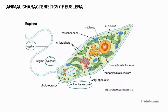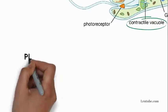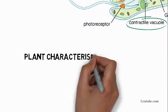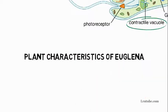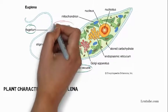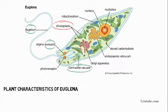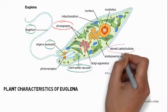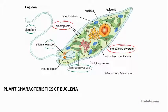The plant characteristics of Euglena: possession of chloroplasts which enables them to carry out photosynthesis, possession of pyrenoids where starch is stored, presence of paramylum granules — the form in which starch is stored — and holophytic (autotrophic) mode of nutrition.